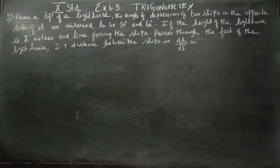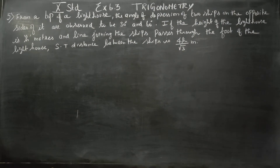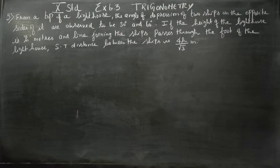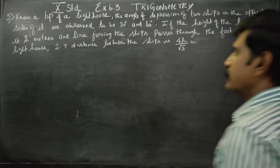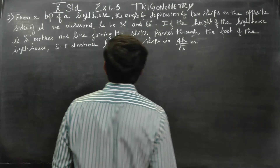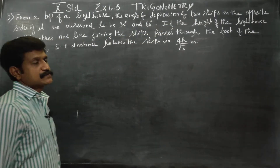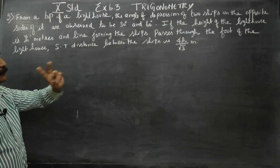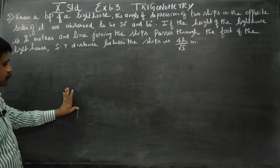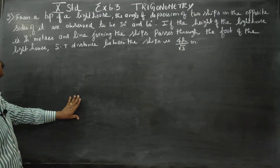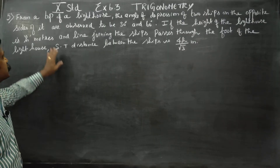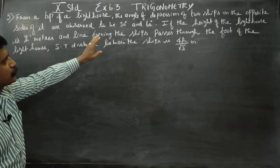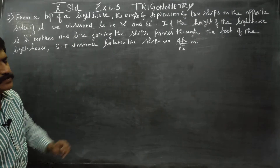Hello 10th Standard Students, in exercise number 6.3, sum number 5: from the top of a lighthouse, the angle of depression of two ships on the opposite sides of it are observed to be 30 degrees and 60 degrees.